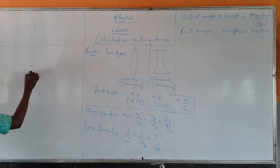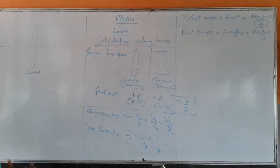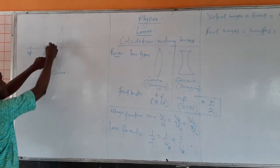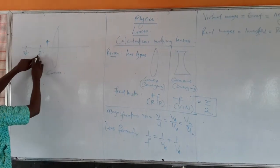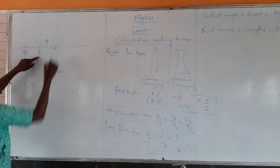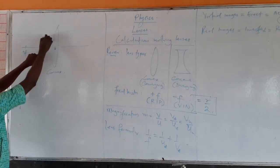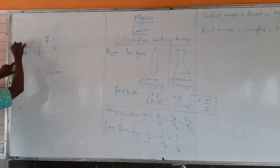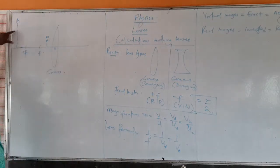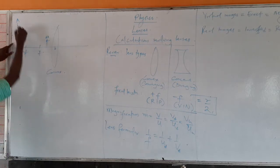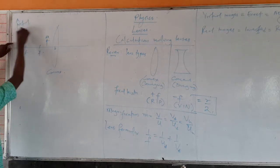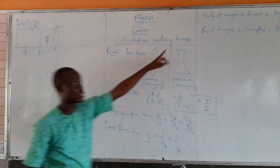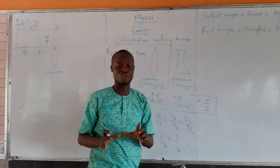If I have a convex lens and the object is placed between the principal focus and the optical center, at the end of the day I get a virtual image which is erect and enlarged. So the distance of this virtual image from the lens will be taken as negative V. Any time we are dealing with a virtual image, the image distance is always taken as negative.